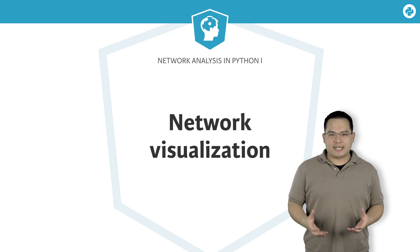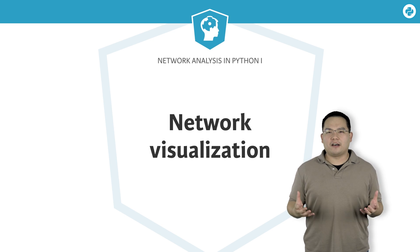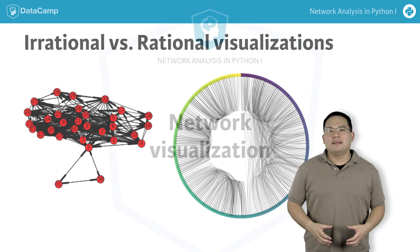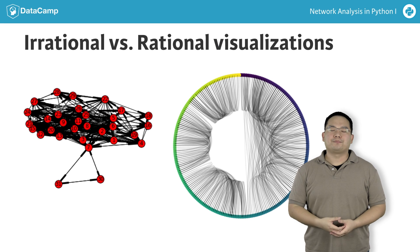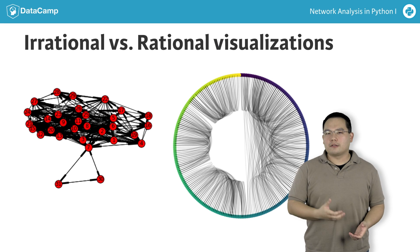You may have seen node-link diagrams involving more than 100,000 nodes. They purport to show a visual representation of the network, but in reality just show a hairball. In this section, we're going to look at alternate ways of visualizing network data that are much more rational.